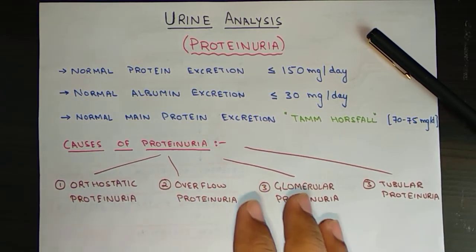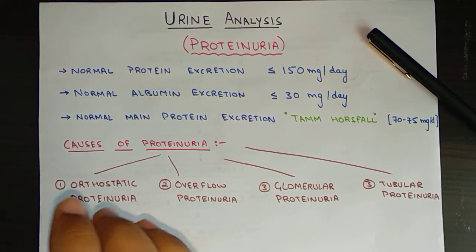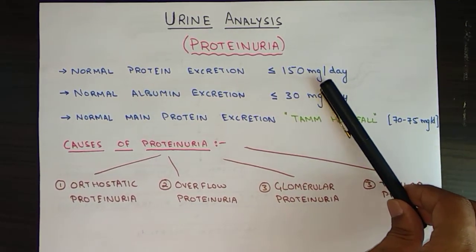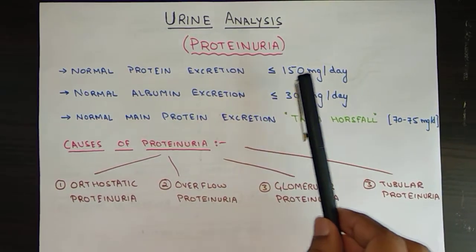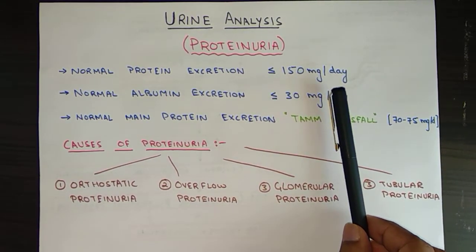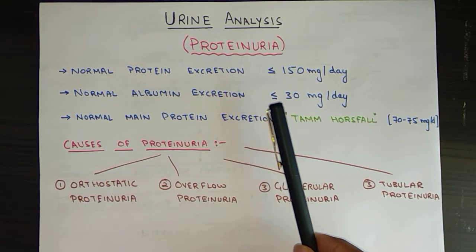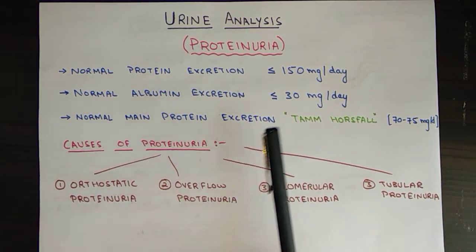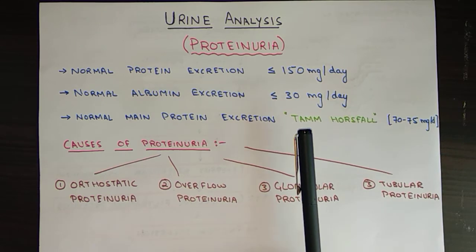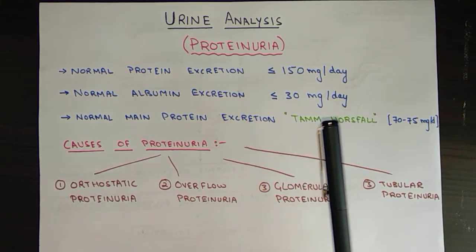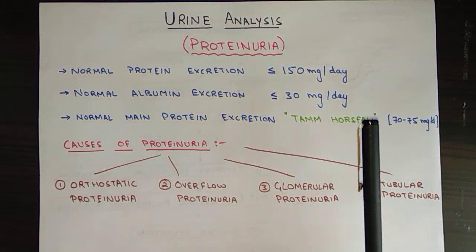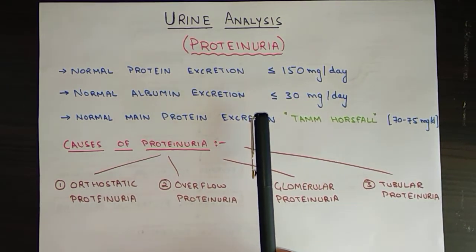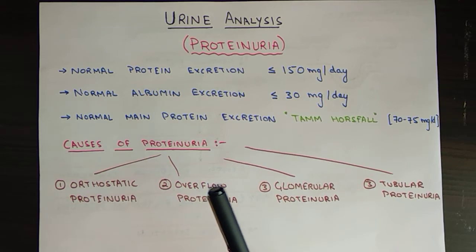First, we should know the normal range of protein in urine. Normal total protein excretion is less than 150 milligrams per day. Normal albumin excretion should be less than 30 milligrams per day. The main protein normally excreted in urine is Tamm-Horsfall protein, with a normal value ranging from 70 to 75 milligrams per day.